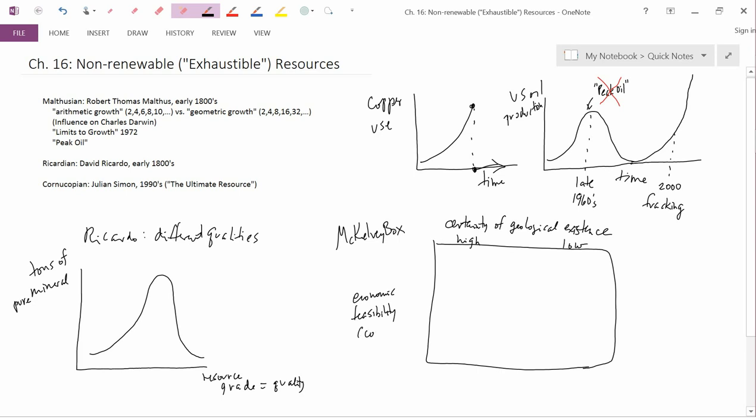Then let's label the vertical axis economic feasibility. You might think of this as being cost. Let's say low cost. So feasibility is low cost. So let's say high feasibility, which would be low cost, and low feasibility, which would be high cost. Now, the entire box, the whole box, is reserves.